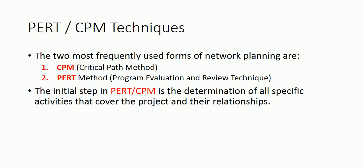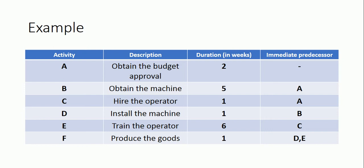Network analysis involves the determination of all the specific activities that cover the project and their relationships. For example, Activity A — obtain budget approval — takes two weeks with no immediate predecessor required. Activity B — obtain the machine — takes five weeks, and Activity A must be completed first. Activity C — hire the operator — requires one week, and Activity A must also be completed before it can begin.